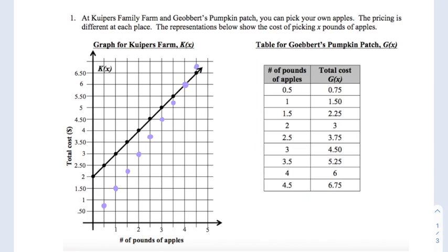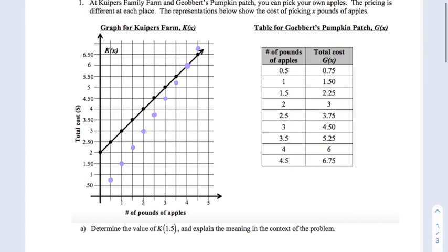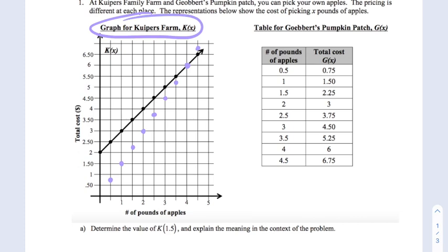Now we should be able to answer some of these questions. For part A, they tell us to determine the value of 1.5 being plugged into k. k(1.5) means plug in 1.5 for k. So the k function is the Kuipers Farm function and we're looking for an input of 1.5, so an x of 1.5, which would take us to this y value of 3.5.